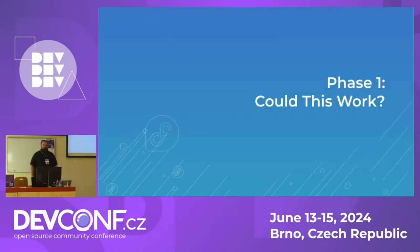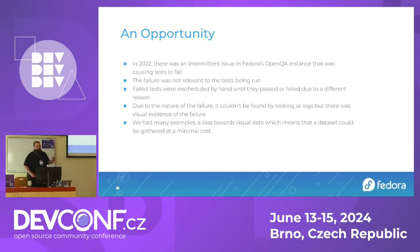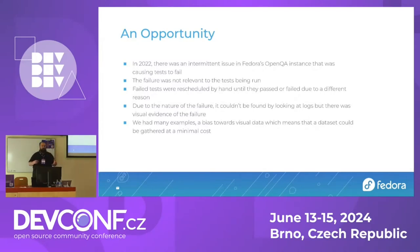Which brings us into the first phase: could this actually work? In 2022 we were presented with an opportunity — well, it's an opportunity in retrospect, it was not as fun at the time. We had an intermittent issue in the production instance where jobs would just crash. There was some bad interaction between X and Firefox, so in the middle of a test, X would just die and go to a terminal. When you're doing visual comparisons, if you're at a terminal, you're not going to be able to find the Firefox icon, and tests would just die.